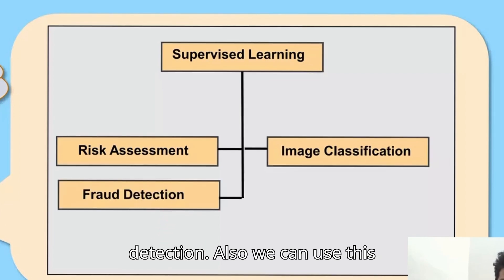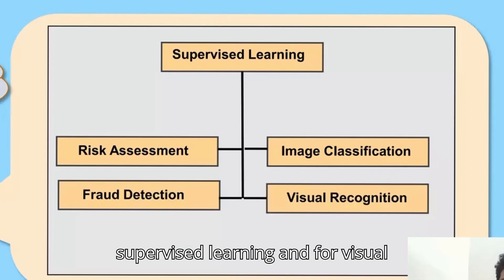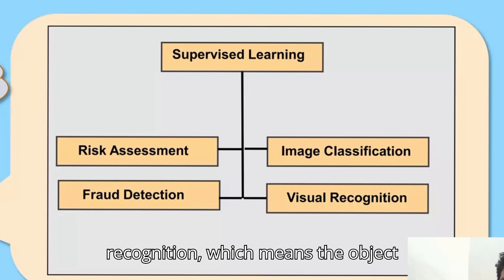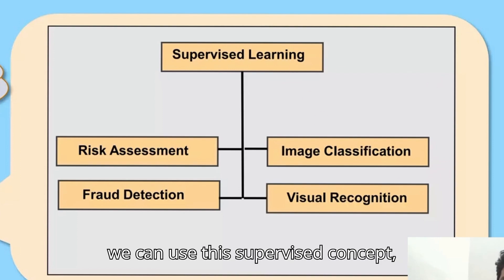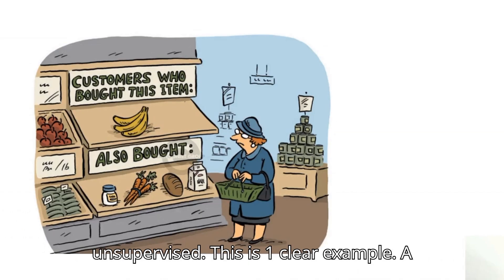For fraud detection, we can use supervised learning and for visual recognition, which means object recognition and pattern recognition identification of objects. Unsupervised is another clear example.